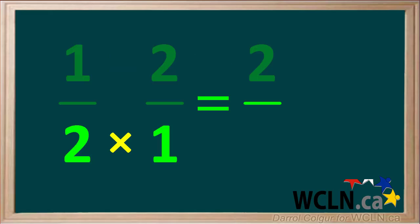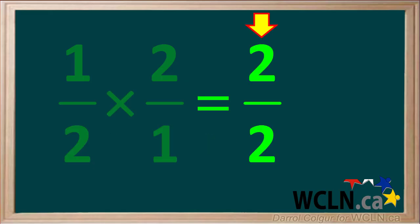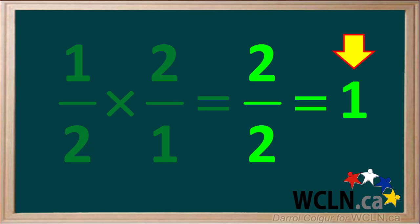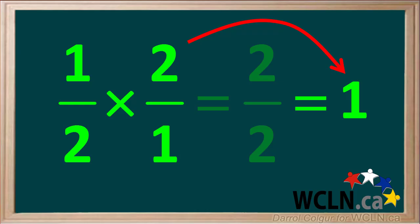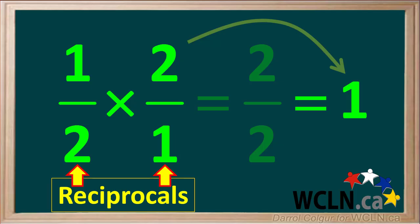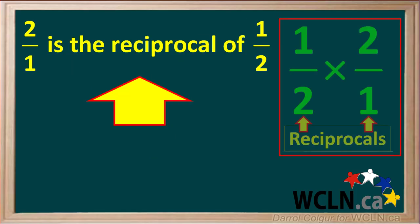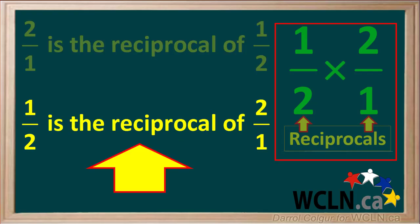And multiplying the denominators, 2 times 1, we also get 2. So the product of these two fractions is 2/2, which is equal to 1. Because 1/2 and 2/1 multiply together to give 1, they are reciprocals of each other. So we can state that 2/1 is the reciprocal of 1/2, and 1/2 is the reciprocal of 2/1.